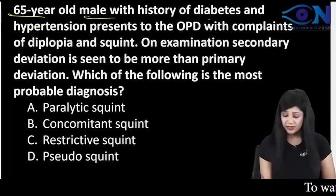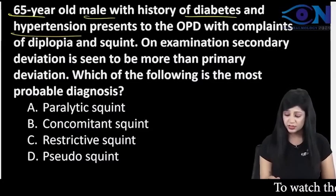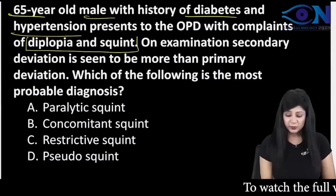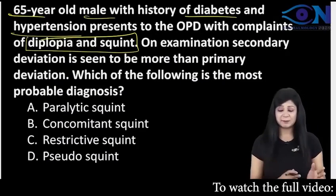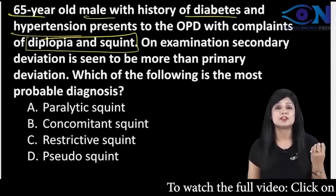Next question: a 65-year-old male with a history of diabetes and hypertension coming with diplopia and squint. We are having diplopia, we are having squint, we are having diabetes and hypertension.